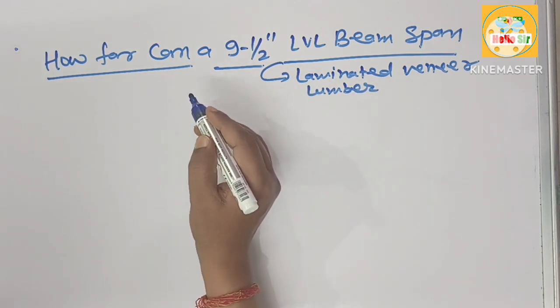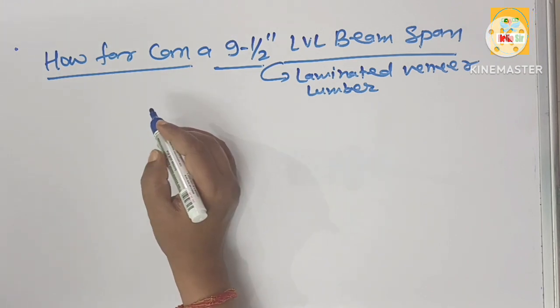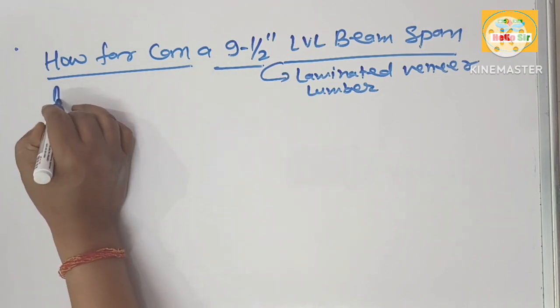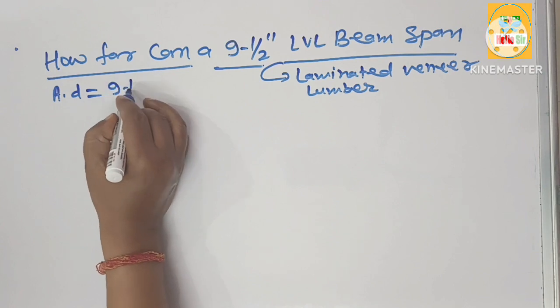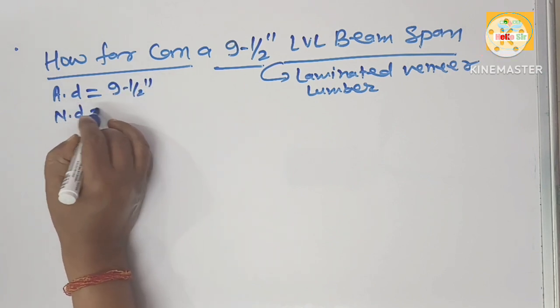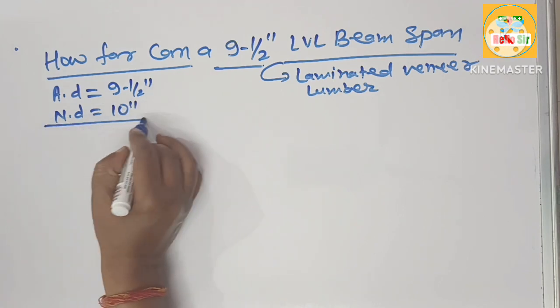It is engineered wood product made from assembly of thin sheets of wood. Here we find out the actual depth is 9½ inches and the nominal depth of this LVL beam is about 10 inches.